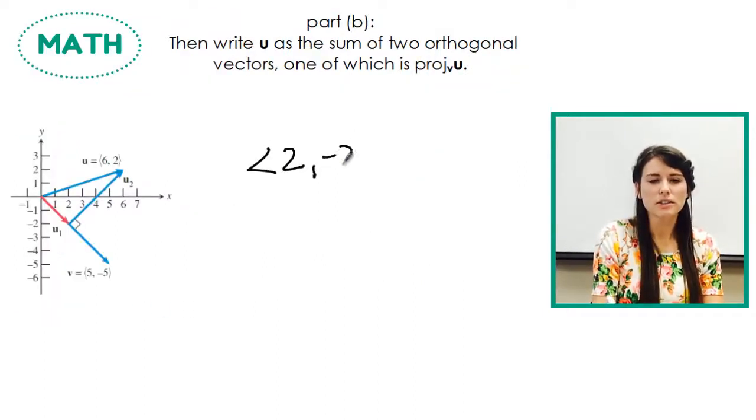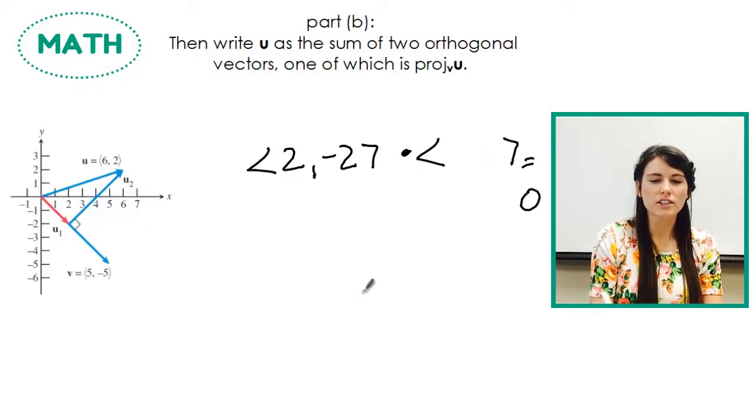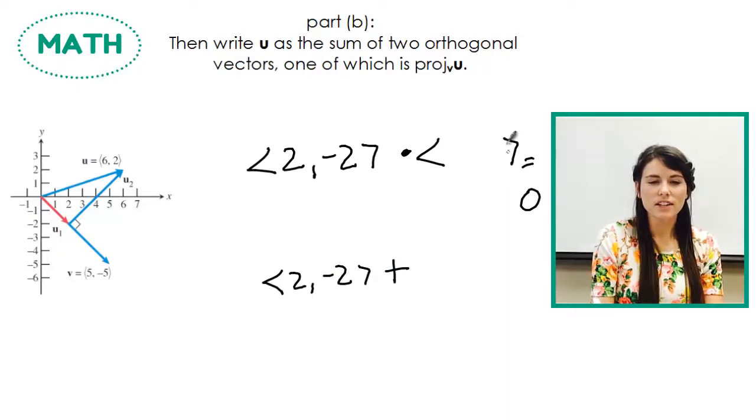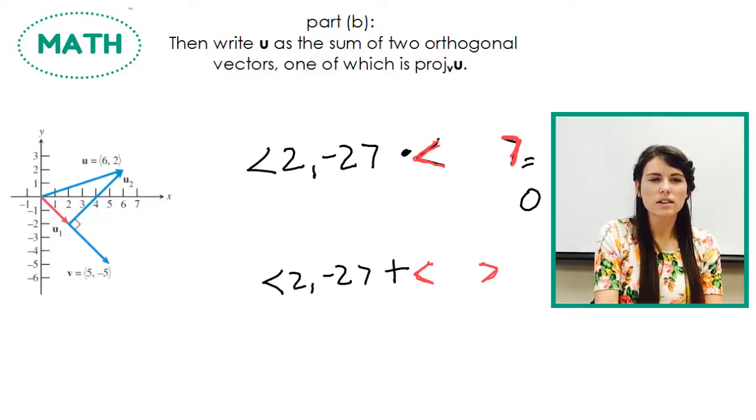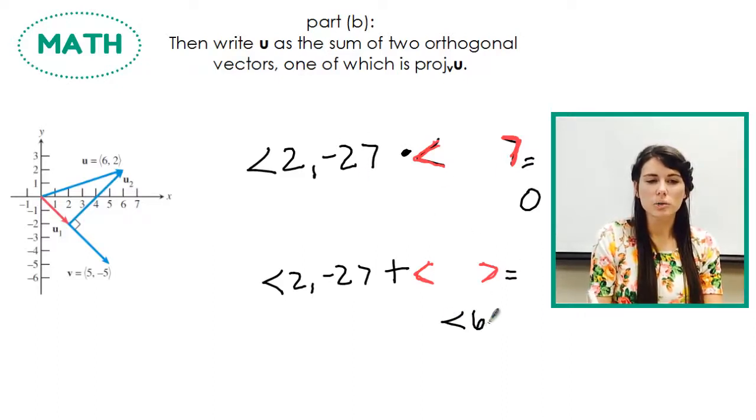I'm going to start with 2 negative 2. And I need to figure out 2 negative 2 times what vector equals 0. So the dot product of that and another vector equals 0. Then I also need to remember that when I add 2 negative 2 and this vector here, I'm just going to color it. Because there's so many notation and labels that it gets super overwhelming. So when I add the two vectors together, they need to equal that vector, which is, they need to equal our u, which is 6, 2.